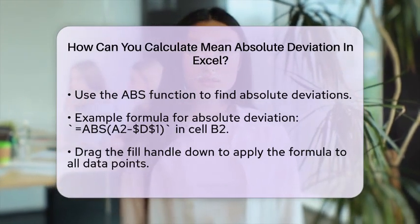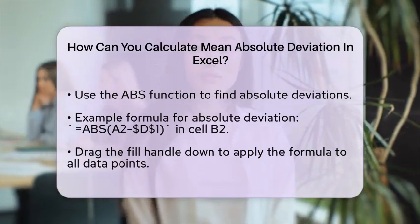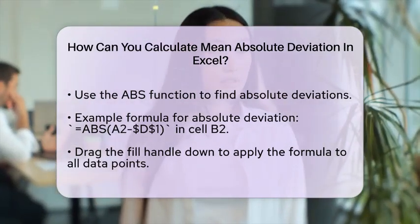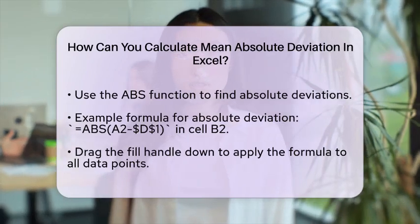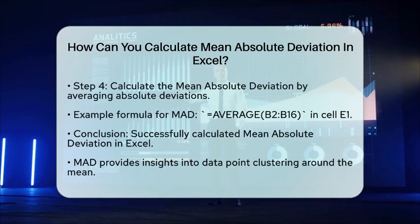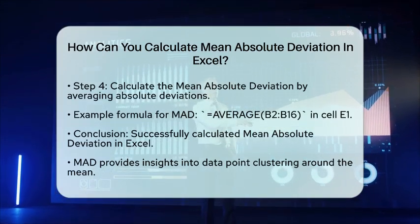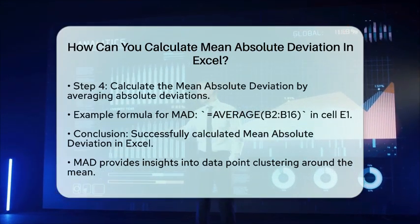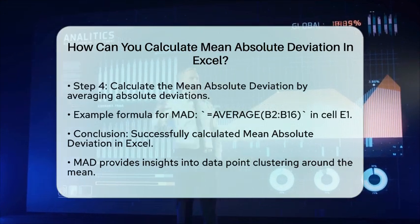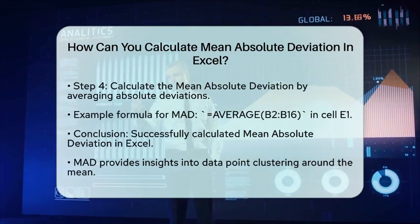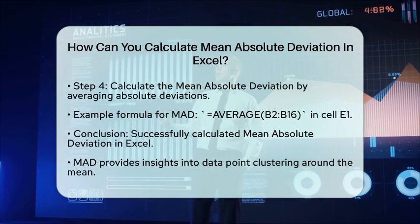Finally, to find the mean absolute deviation, you will need to average these absolute deviations. In a new cell, let's say E1, type the formula =AVERAGE(B2:B16). Press enter, and you will have the mean absolute deviation for your data set.